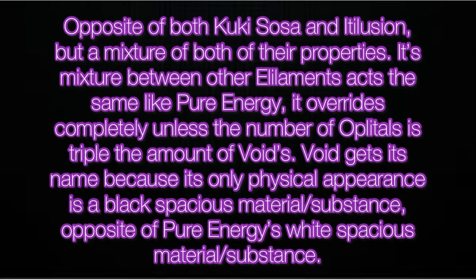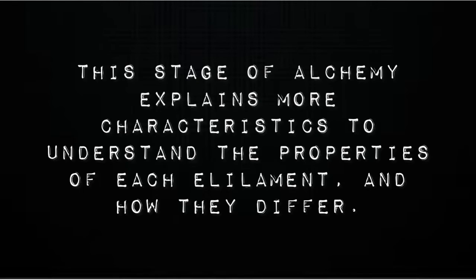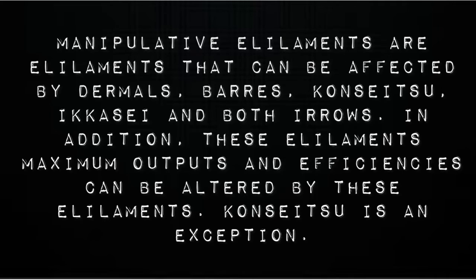Depth for stage two alchemists: this stage of alchemy explains more characteristics to understand the properties of each element and how they differ. Manipulative elements are elements that can be affected by dermals, berries, koncietsu, ikase, and both eros. In addition, these elements' maximum outputs and efficiencies can be altered by these elements. Koncietsu is an exception for this.